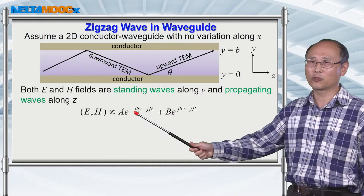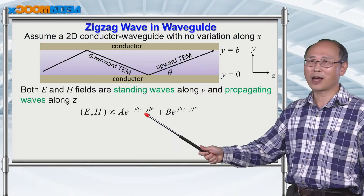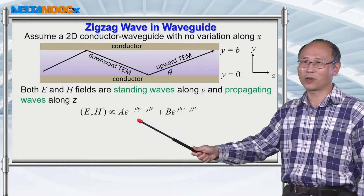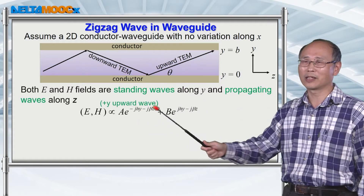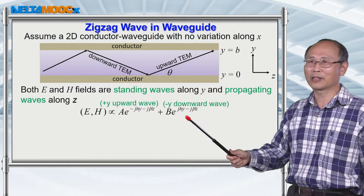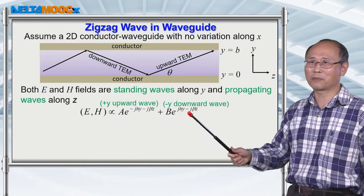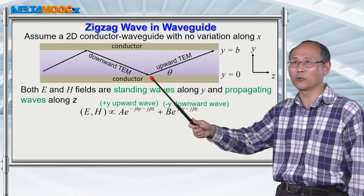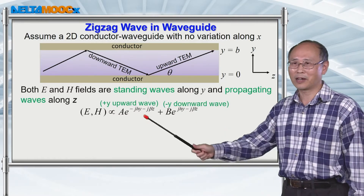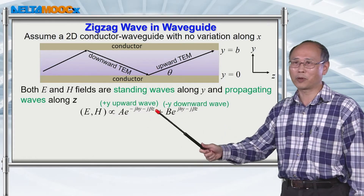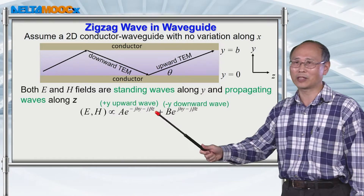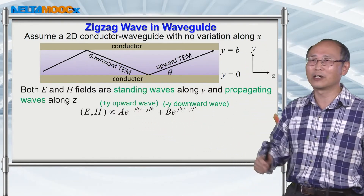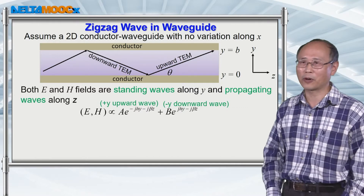In general, you have two components: one propagating upward along the y direction, and the other component propagating along the minus y direction. This is the downward wave. But either expression will have a propagation constant along the z direction, because in general the energy still flows in the plus z direction.